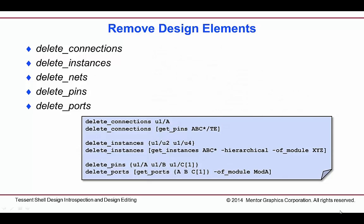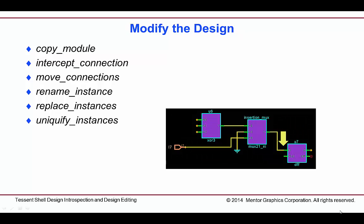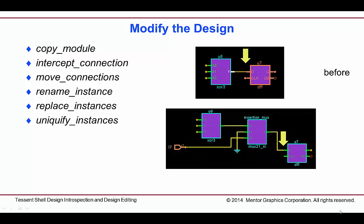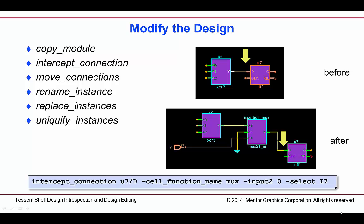Removing or deleting design objects is easy to do with the DELETE commands. There are also a variety of commands available to modify the design in different ways, such as moving connections and replacing instances. This example shows the use of the INTERCEPT CONNECTION command to add a multiplexer before the specified pin. Other simple logic gates can also be used with INTERCEPT CONNECTION, like inverters, AND gates, NOR gates, etc.